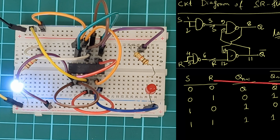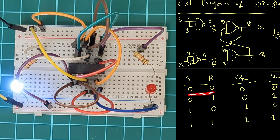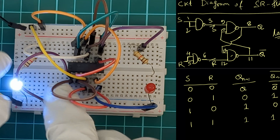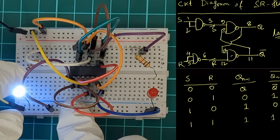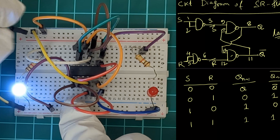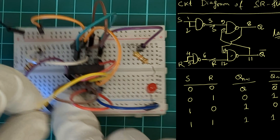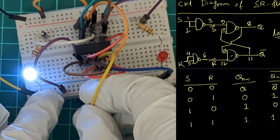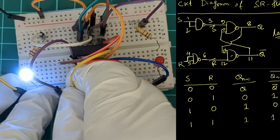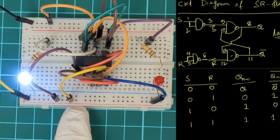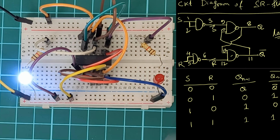Now I will check the 0-0 condition. If we keep input S=0 and R=0 we should get the memory state — the output should remain the same. I connect S and R both to ground. You can see S=0, R=0: Q output is 0 and Q bar is 1. That matches the previous state.